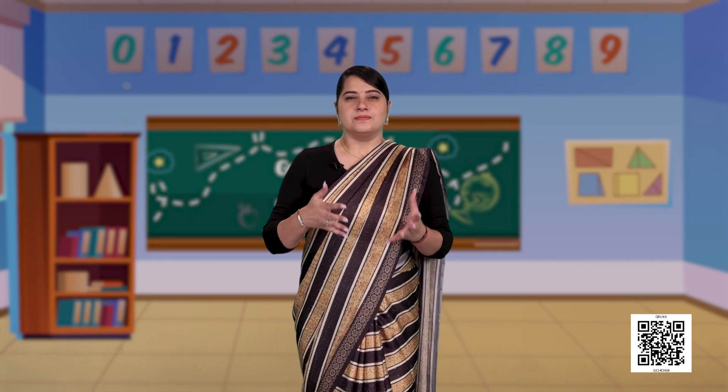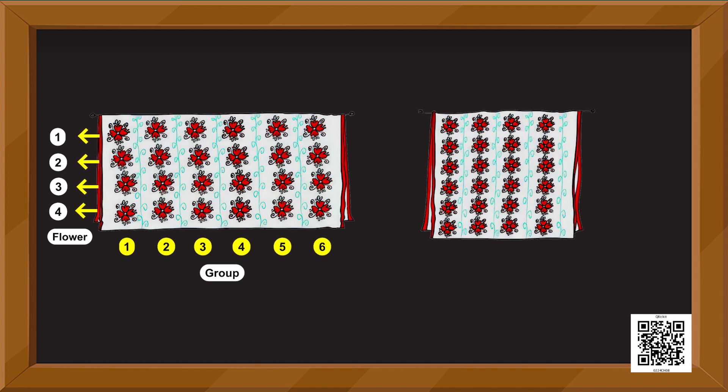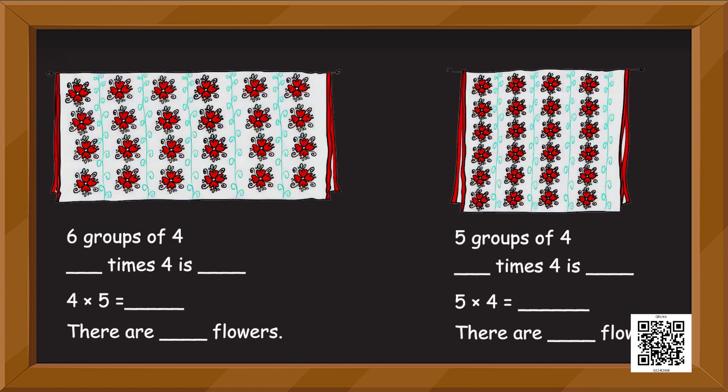After those yummy gulab jamuns, it's time for these flowers. In the first image you can see six groups of four flowers, and in the second image we have four groups of six flowers. Can you fill in the blanks on your screen and tell me the total number of flowers in each? Take your time, do it slowly without making mistakes, and if something seems wrong, check what you have done.